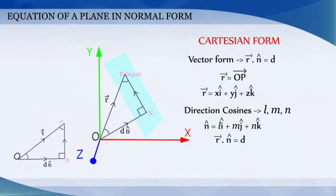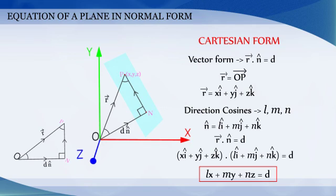Substituting the corresponding values in the vector equation of the plane, we get the Cartesian equation of the plane in the normal form as lx plus my plus nz is equal to d.